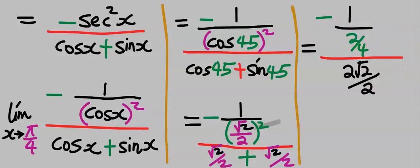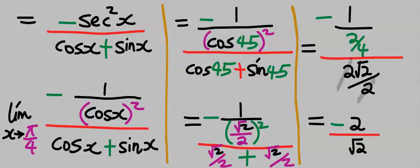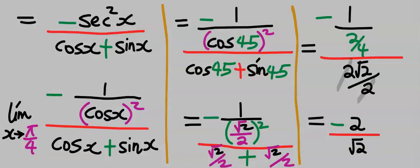The squaring removes the square root, leaving 2. Squaring 2 gives 4. The 2 cancels with 2, and we are left with −2 divided by √2. This is not in simplest form.